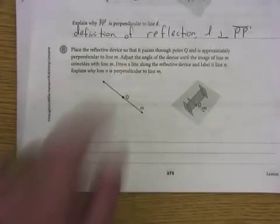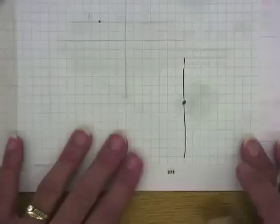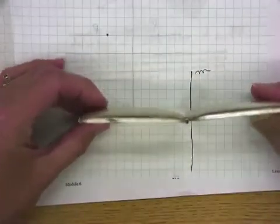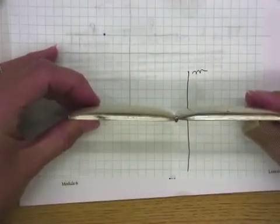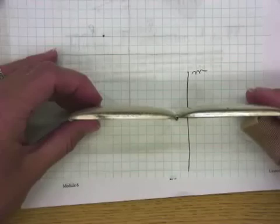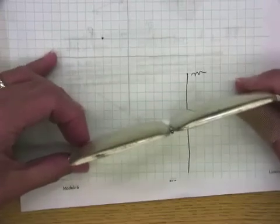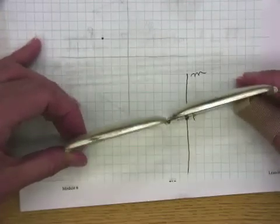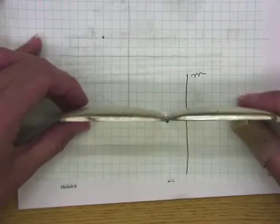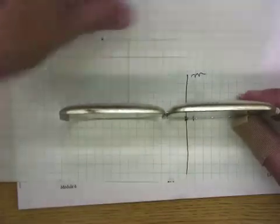Now it's asking me to put the reflective device so that it passes through Q and is approximately perpendicular to line M. Here's my line M, here's my point P. What I'm looking at in my mirror right now is the line reflecting on itself. If you turn the mirror so it's not perpendicular, you would see that your reflection, the line isn't straight. But when it's perpendicular, your line is straight. The reason for that is that it's mapping onto itself.